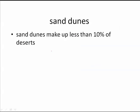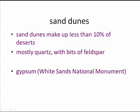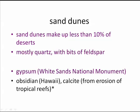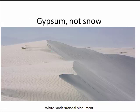Sand dunes are sand deposits. One thinks of sand dunes as making up deserts, but they only make up less than 10% of a desert. Most sand is made of quartz, because quartz is one of the most resistant minerals — though it might have a few bits of feldspar. You could also have sand made out of gypsum, as in White Sands National Monument, or even obsidian or calcite. Here we have the sand dunes of Death Valley, sand made of quartz.